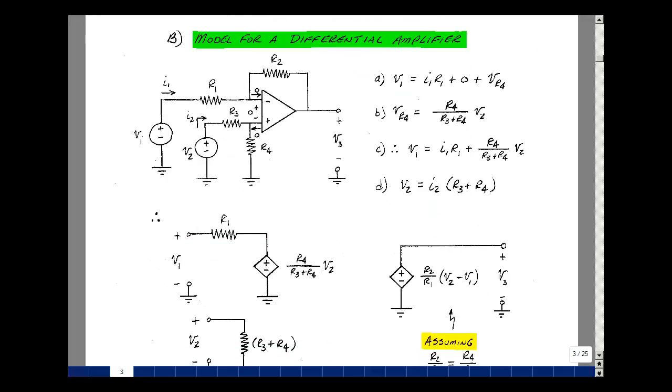The differential amplifier, like the inverting and non-inverting amplifier, is a basic building block in audio circuits. Let's do a model for this circuit. You want to replace all of this by an equivalent circuit. If I apply a voltage V1, current will flow. Go around this loop, write the results. The rise in voltage is V1. I have R1 times I1 plus zero, plus the voltage across resistor R4.